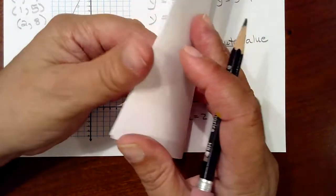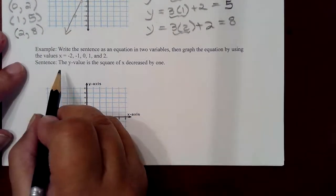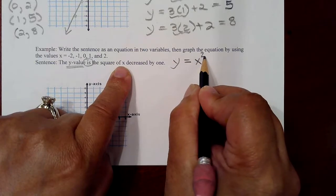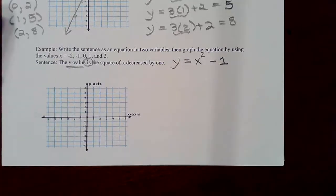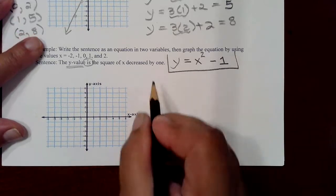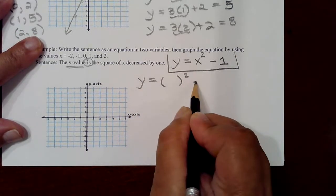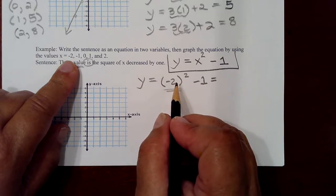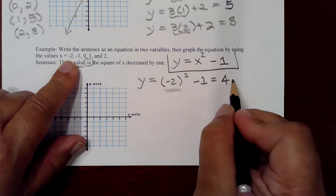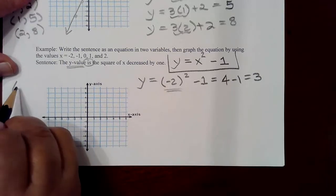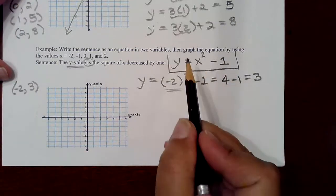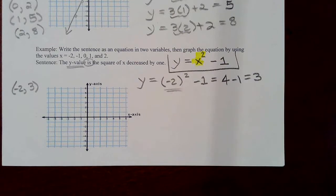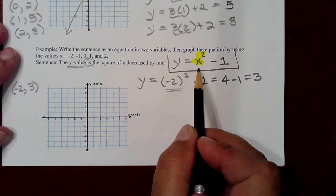Now we're going to create another equation. In this problem it says the Y-value is the square of x, decreased by 1. We're asked to plug in several values. First, plug in negative 2: negative 2 squared — anything you square becomes positive — so that's 4. Subtract 1, you get 3. When plugging in negative 2, you get 3. You should know this is a parabola — anytime there is a square on the x, a square on the x causes a parabolic shape, so plan for that.